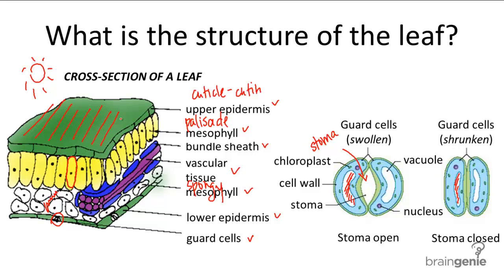The last type of cell we haven't yet mentioned is the bundle sheath cell, which are tightly packed around the vascular tissue, as shown here in blue. We mentioned in the photosynthesis videos that in C4 plants, the Calvin cycle occurs in the bundle sheath cells. All leaves have bundle sheath cells, but in C4 plants in particular, they are enlarged.